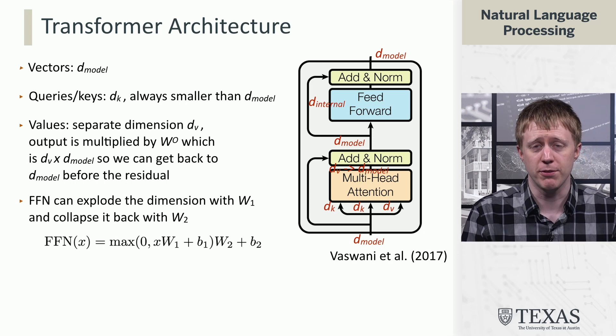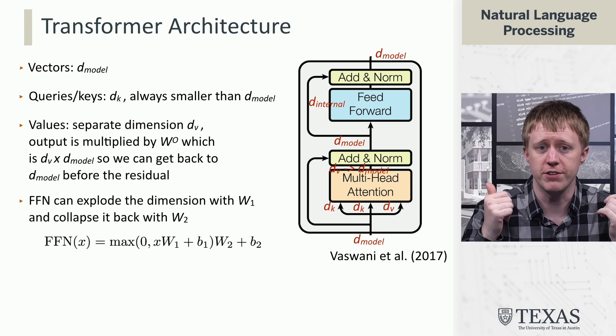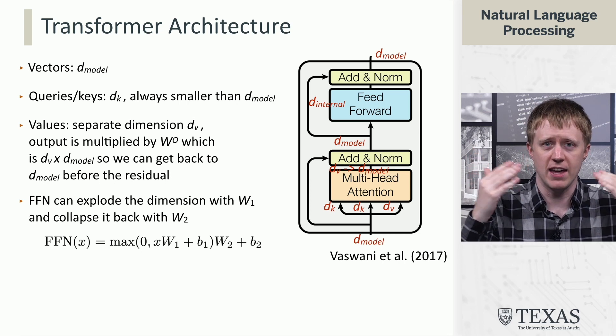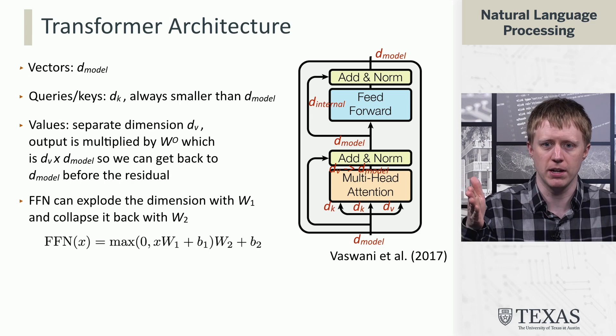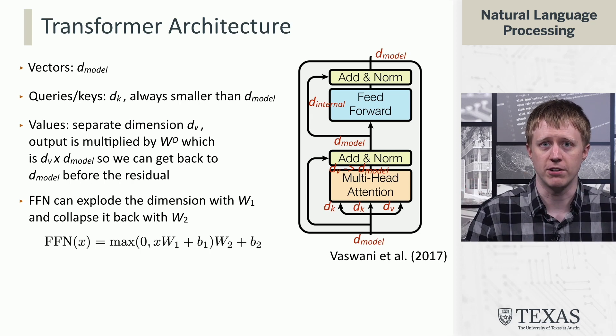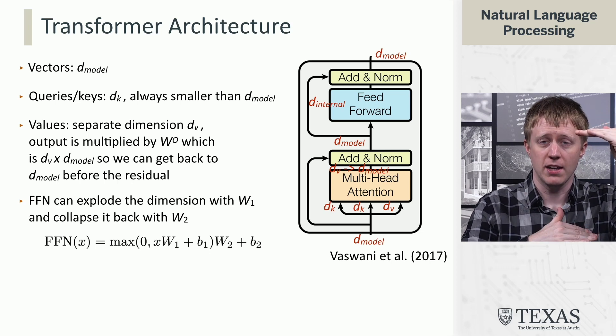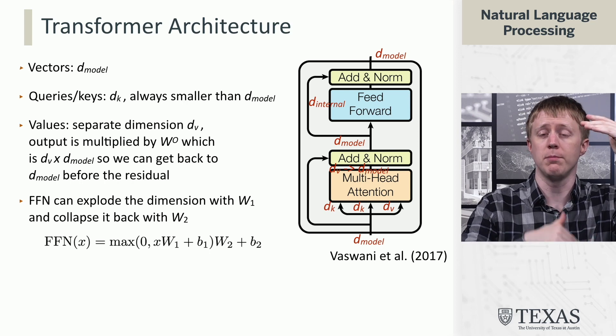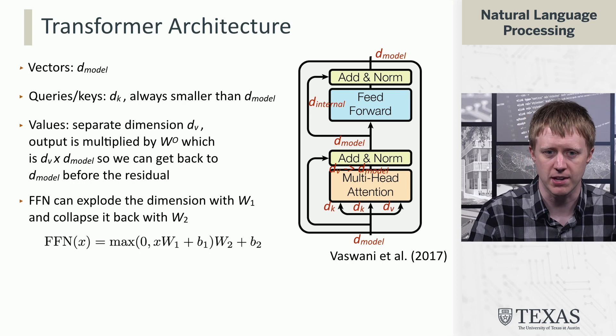And then finally, we have the feed forward network which can blow things up to a larger dimension, which we're going to call D internal here, and then kind of collapse it back down. So, it has one big hidden layer in the middle there and then again comes back down to D model because we're going to have another residual connection. And so, now this whole transformer block is going to have D model as input and D model as output and then we can stack that as many times as we want and keep everything the same size.